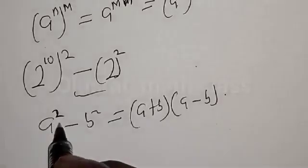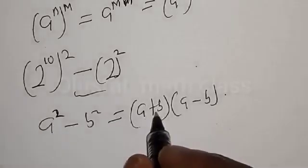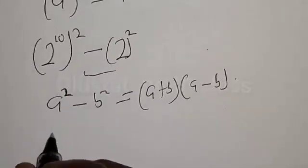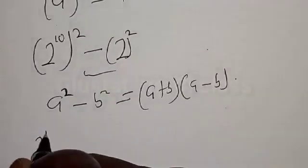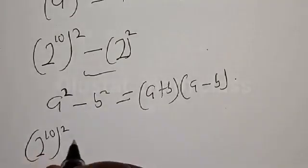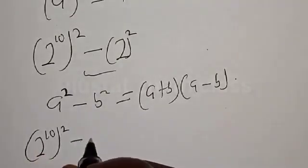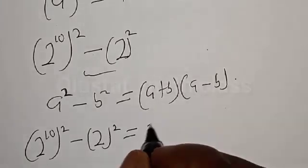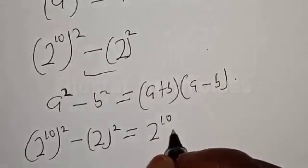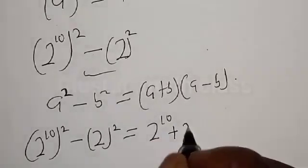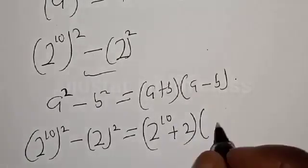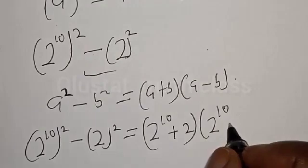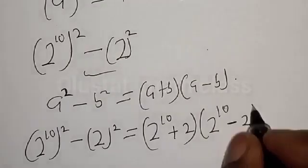Remember, if you have a squared minus b squared, that is equal to (a + b)(a − b). So our equation becomes: 2 raised to power 10 squared minus 2 squared, which equals (2 raised to power 10 plus 2) multiplied by (2 raised to power 10 minus 2).